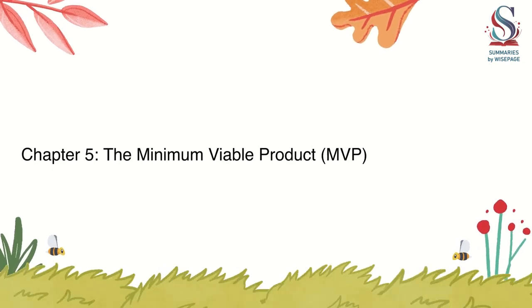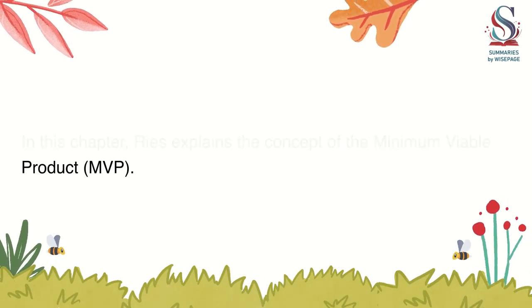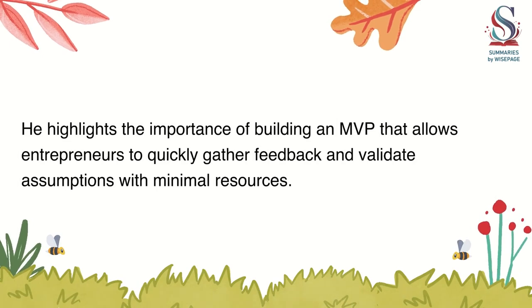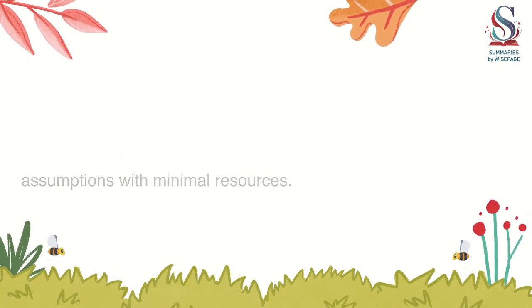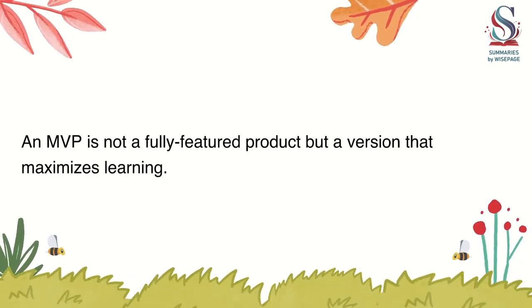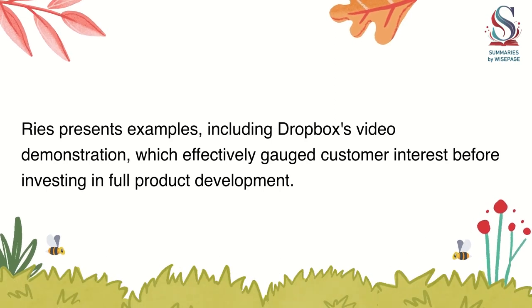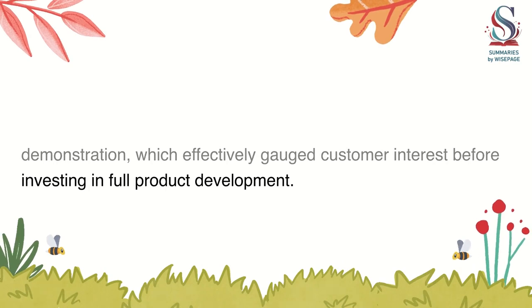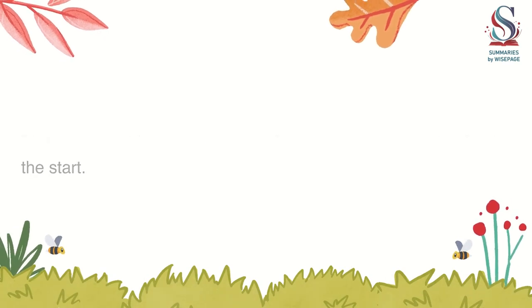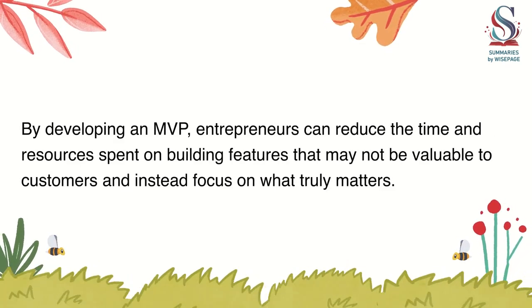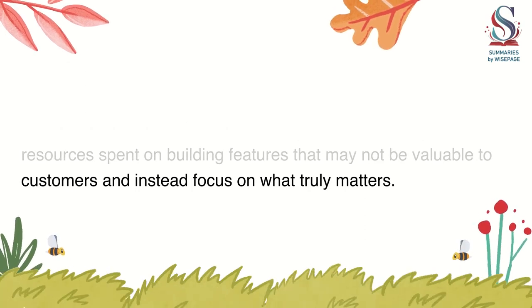Chapter 5: The Minimum Viable Product (MVP). Ries explains the concept of the Minimum Viable Product. He highlights the importance of building an MVP that allows entrepreneurs to quickly gather feedback and validate assumptions with minimal resources. An MVP is not a fully featured product but a version that maximizes learning. Ries presents examples, including Dropbox's video demonstration, which effectively gauged customer interest before investing in full product development. The focus is on learning, not on delivering a perfect solution from the start. By developing an MVP, entrepreneurs can reduce the time and resources spent on building features that may not be valuable to customers and instead focus on what truly matters.